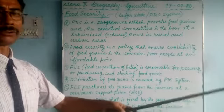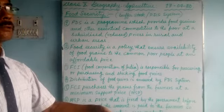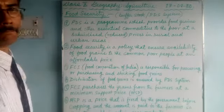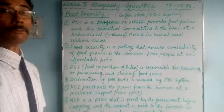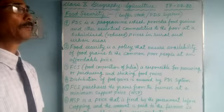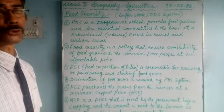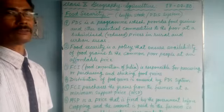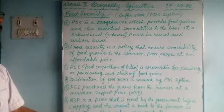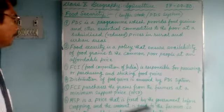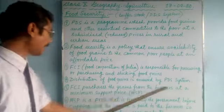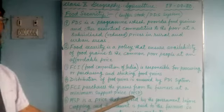So farmers will not suffer any losses. The government will support them through the minimum support price. Along with that, the government provides other inputs at a subsidized rate, so naturally the farmers will have a profit. FCI purchases the grains from farmers at the minimum support price, MSP.